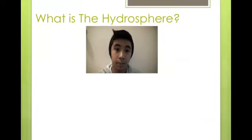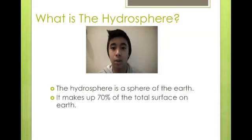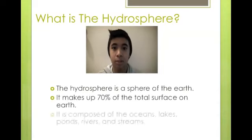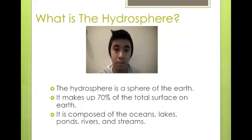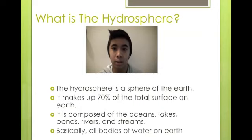What is the hydrosphere? The hydrosphere is the sphere of the Earth. It makes up 70% of the total surface on Earth. It is composed of the oceans, lakes, ponds, rivers, and streams. Basically, the hydrosphere is all the bodies of water on Earth.